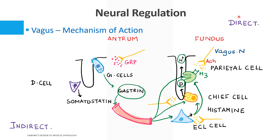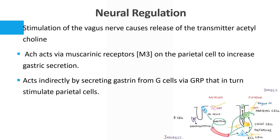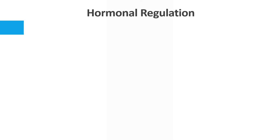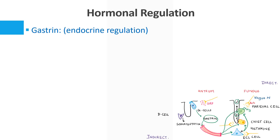So gastrin has multiple roles in increasing gastric secretion. To summarize, vagus nerve stimulation causes release of acetylcholine, which acts via muscarinic M3 receptors on the parietal cell to increase gastric secretion, and also acts indirectly by stimulating gastrin secretion from G cells via GRP, which in turn stimulates the parietal cells.